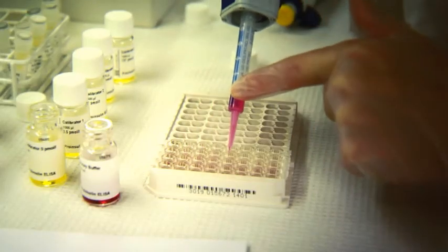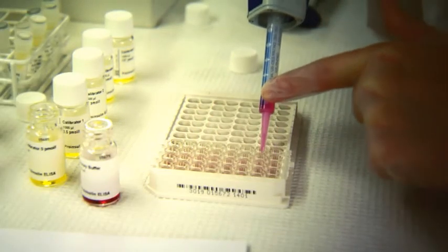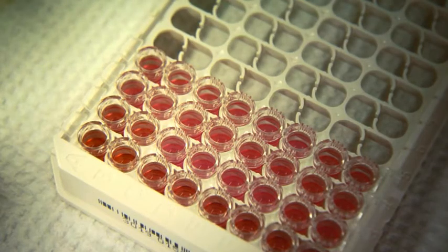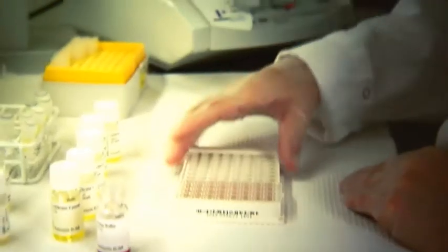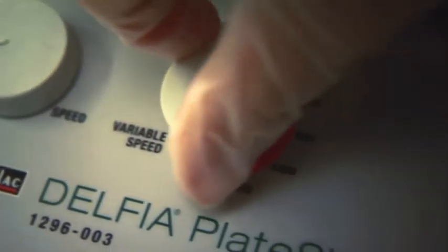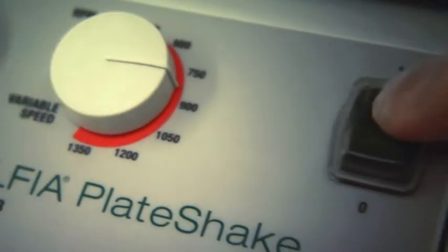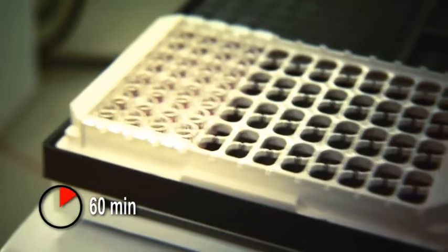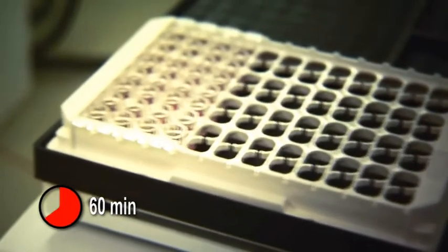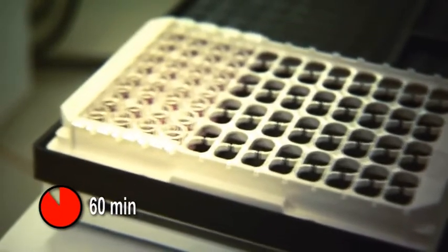Add the assay buffer to all wells, preferably with a multi-dispensing pipette. Notice the color change from yellow to pink. Incubate the plate on a plate shaker at room temperature, in this assay for 60 minutes. The shaker should be set at 700-900 RPM orbital movement and plate sealer is not needed. The proper incubation times are listed in the directions for use.